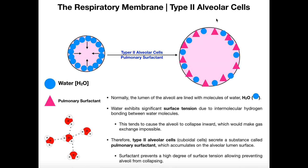However, in type 2 alveolar cells, these are cuboidal in shape, and so these are going to be very different in function.